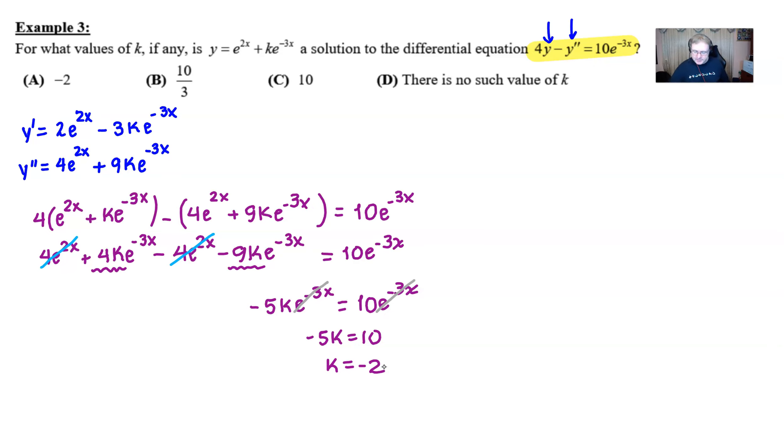Wouldn't it be nice if k equal negative 2 is a choice? And, indeed, it is. And that's a good sign. So, it's just a little bit of a different way to work with verifying a differential equation by solving this k. Could be a type of a problem that you could see on the AP exam, potentially in the multiple choice section.